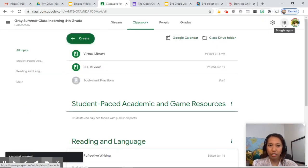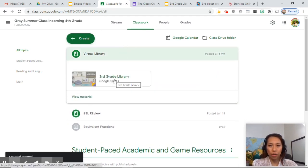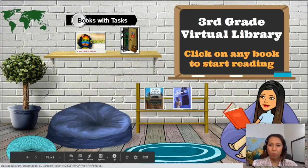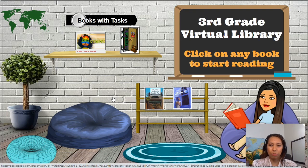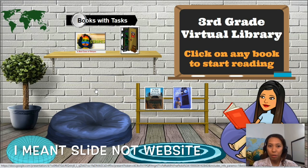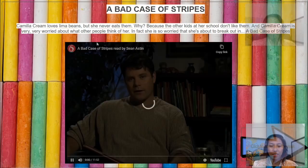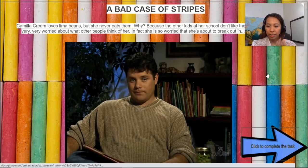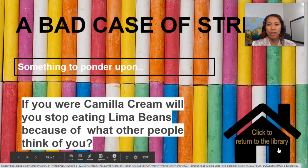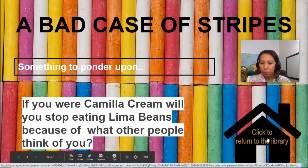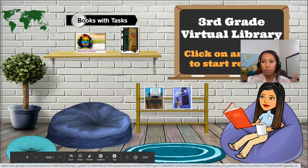Now let's check if the links work — make sure to use present mode. Welcome to the third grade virtual library. I'm clicking but it's not bringing me to any other website because we linked it to itself. Now I want to read this book — 'A Bad Case of Stripes.' Once they are done, they can click to complete the task and it will bring them to the self-assessment question, and once they click the check mark, they should be brought back to the main page.